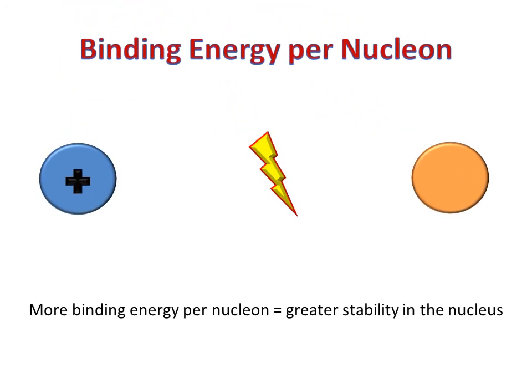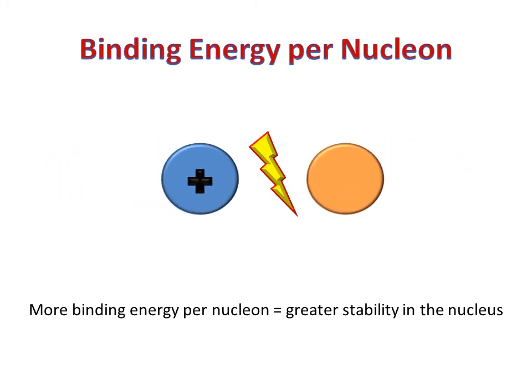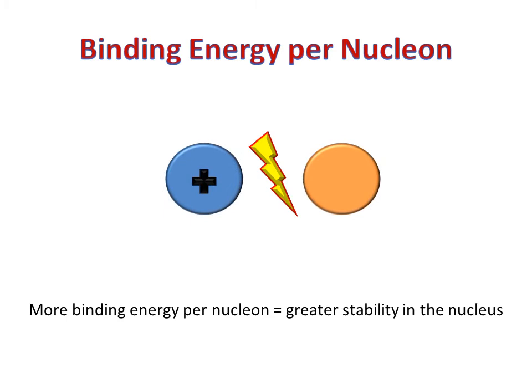The binding energy per nucleon can be easily found by dividing the total binding energy by the number of particles in the nucleus. The more binding energy in the nucleus, the greater the stability of the atom.